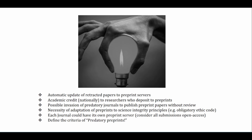The sixth possible outlook is the automatic update of retracted papers to preprint servers. They will have the ability to update retracted papers as official journals are doing currently. The seventh is giving academic credit to researchers who deposit to preprints, which will encourage the progression and development of preprints in the future.